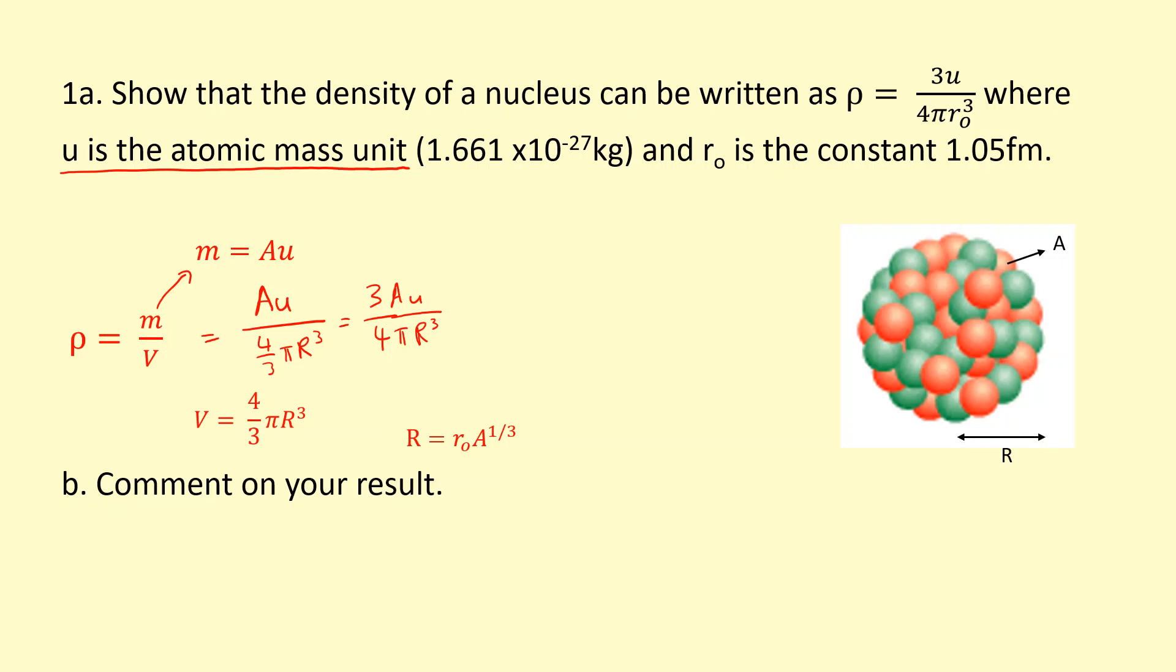So I'm going to put that in here as well, instead of r. If I do that, 3 Au over 4 pi, and instead of r, I'm going to use r0 A to the third cubed. And then I'm going to simplify that. I'm going to expand that bracket: 3 Au over 4 pi.